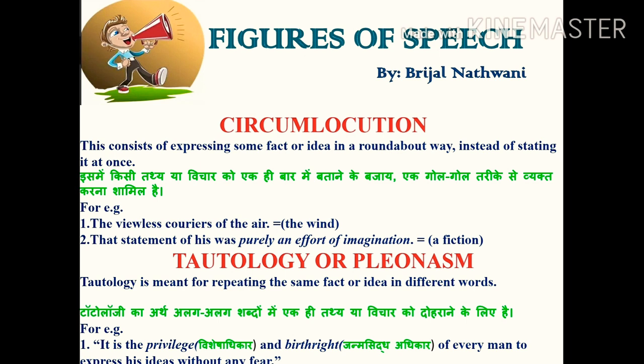Our last figure of speech is tautology. Tautology means repeating the same fact or idea in different words. For example: 'It is the privilege and birthright of every man to express his ideas without any fear.' Here, privilege and birthright have the same meaning, but the same idea is repeated using two different words. Therefore, this is the figure of speech tautology.